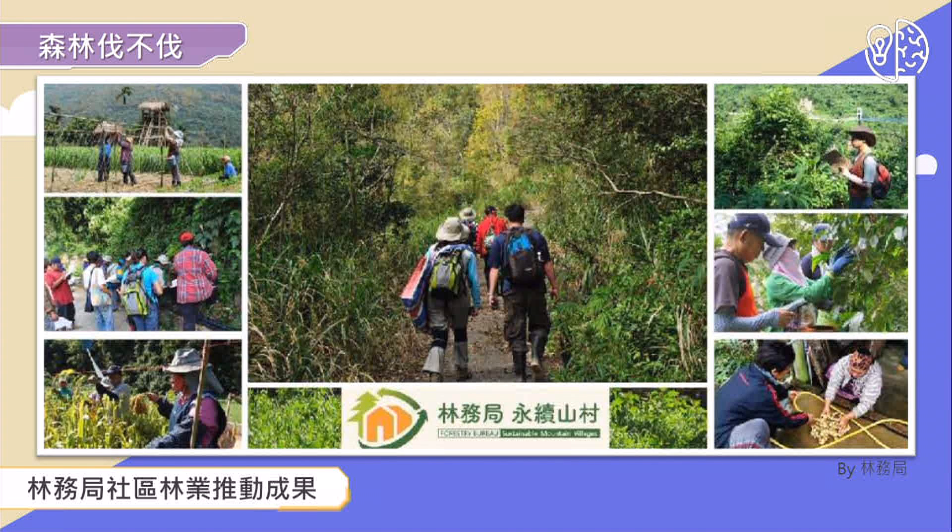我们的农委会包括林务局现在开始积极努力，我们希望我们的木材自给率可以从现在不到1%能够到3到5%。现在已经积极在做，各地的这个林政单位也开始在统计有哪些木材的地方可以去使用就拿出来用。